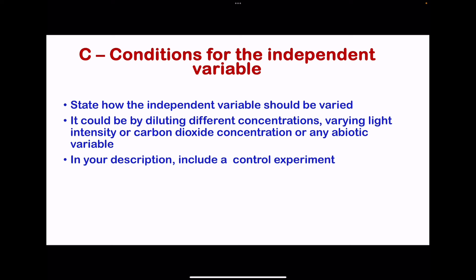The first one is about conditions for the independent variable. We have to state how the independent variable should be varied. This could be light intensity, concentration of something — sometimes you need to dilute different concentrations — it could be carbon dioxide concentration, or any abiotic variable. You have to state how they're going to be varied, and it's good to include a control experiment, for example, an experiment with zero concentration.